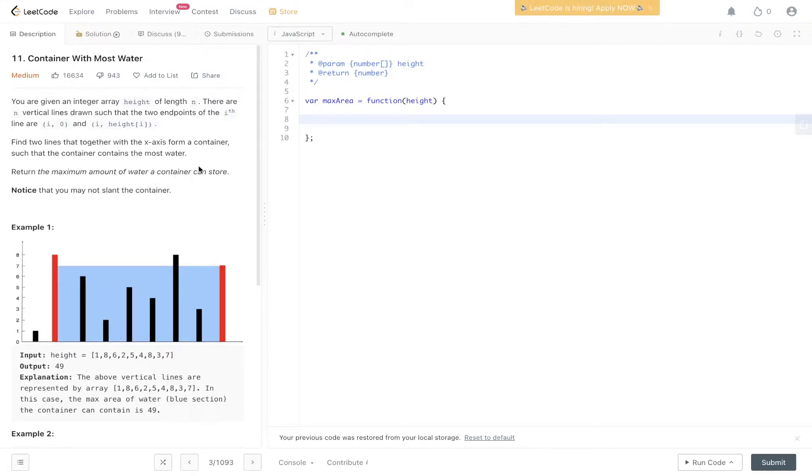Return the maximum amount of water a container can store. The basic idea is to carry out a two-pointer technique where we only have one pass throughout this entire height array, keeping the time complexity at O(n).